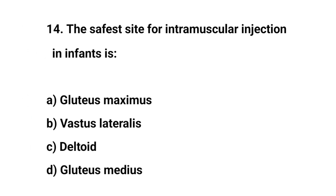Question No. 14. The safest site for intramuscular injection in infants is? The right answer is B: Vastus lateralis.